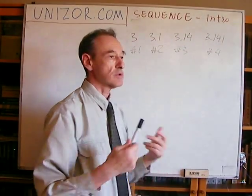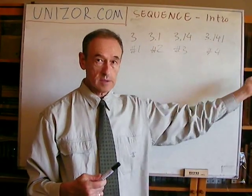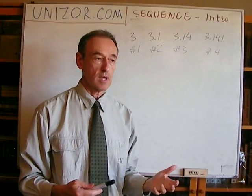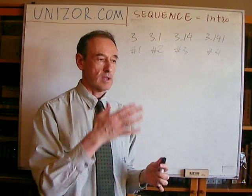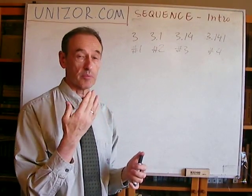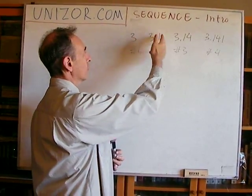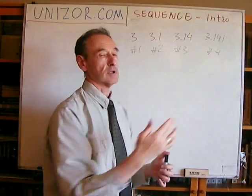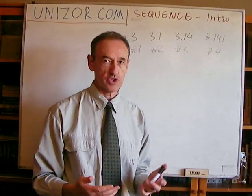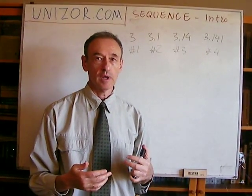So basically, I can continue this sequence of numbers indefinitely. I have a sequence which represents the approximation of pi to zero, one, two, three, etc. decimal places. There is no formula which can express this particular type of sequence.